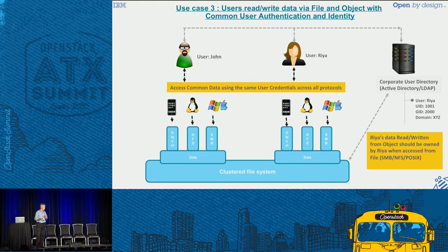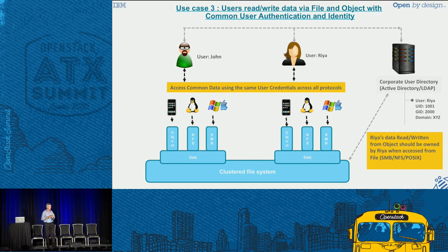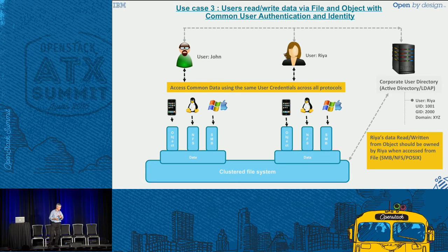The last use case is more the individual user style use case. I've got two users, John and Ria, and they want to be able to access their data based on whatever type of device they're using. If I've got my phone and I'm taking pictures — whether I'm at my house, at my office, or on Simon's boat — I want to take the picture and upload it to the object store. Once it's there, I want to be able to access it from my workstation or my Windows device. I need a consistent user ID mapping so that I can authenticate to my mobile device with one set of credentials and access it from any other device with the same credentials. The work we're doing is helping to enable that.